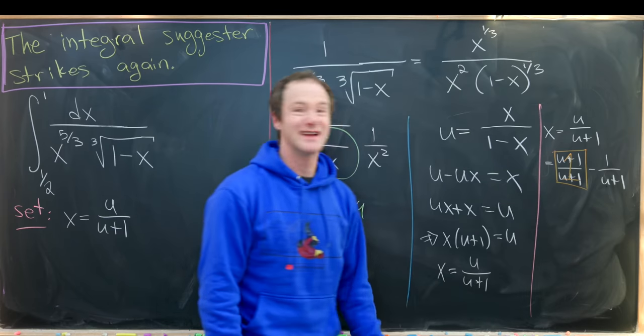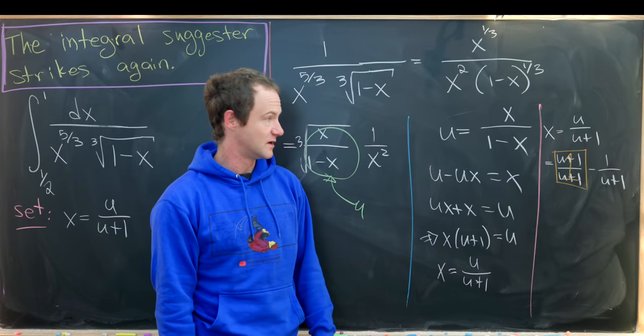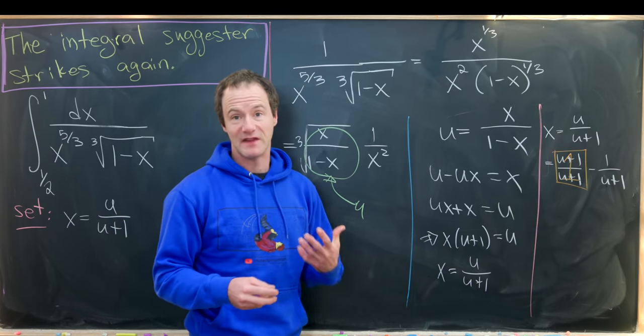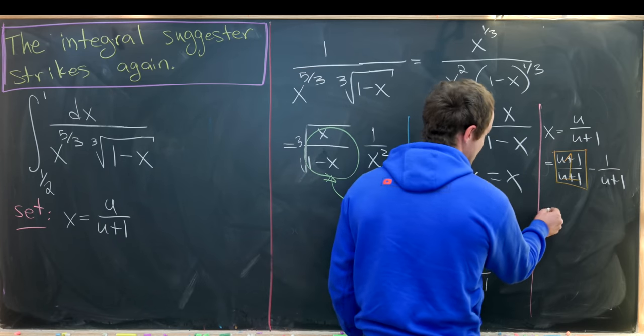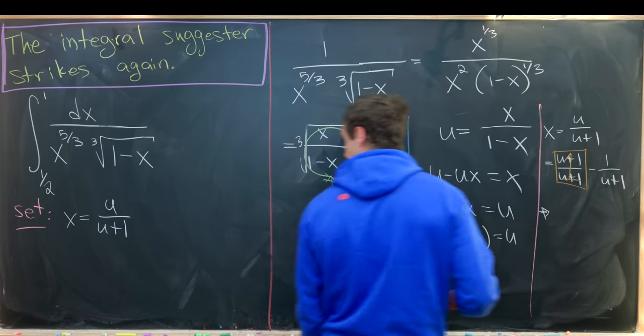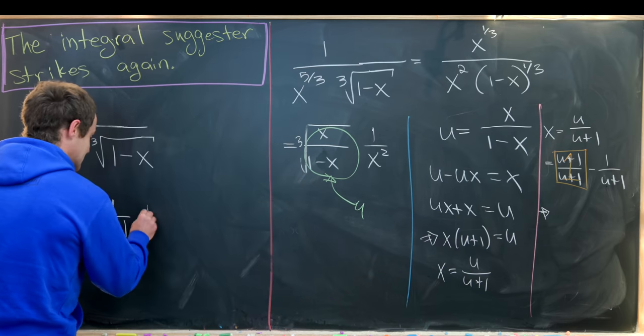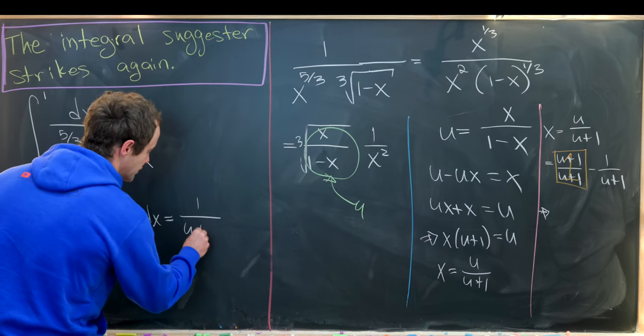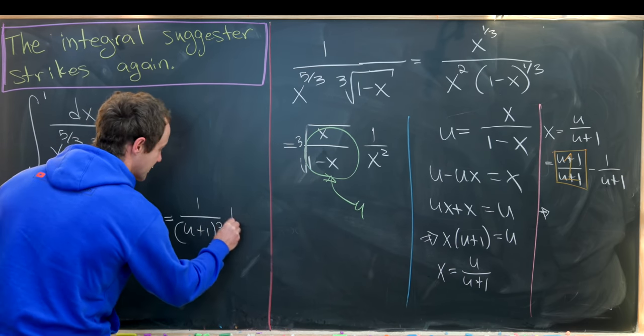And then this guy over here, it's easier to take the derivative of. We can just use maybe the power rule, keeping in mind that's u plus 1 to the negative 1. So all of that says that dx can be rewritten as 1 over u plus 1 squared du.